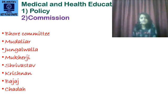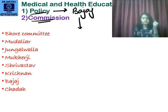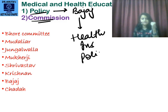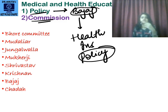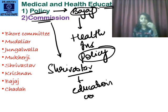Medical and Health Education Policy versus Commission — these are two different things with different answers. For policy, the answer is Bajaj Committee: the mnemonic is Bajaj Alliance health insurance policy, so policy equals Bajaj. For the education commission, the answer is Shrivastav Committee, because again education is Shrivastav.